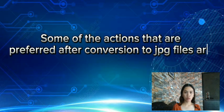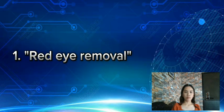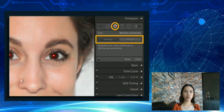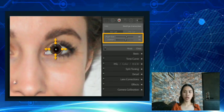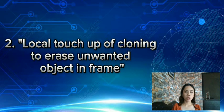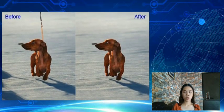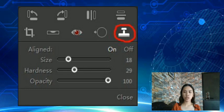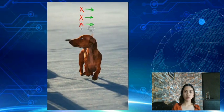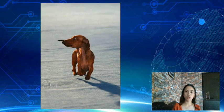Now let's move on to actions preferred after conversion to JPEG files. Red eye removal: red eye removal eliminates the red discoloration of a person's eyes that can result from a camera flash. Pet eye removal eliminates the yellow or green discoloration that can occur in photos of pets. Next: local touch-up to erase unwanted objects in the frame. The impact of a photo can easily be spoiled by an unwanted object; the spot-healing brush can be used to remove an object without altering the overall composition.